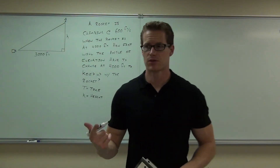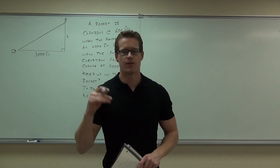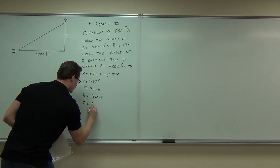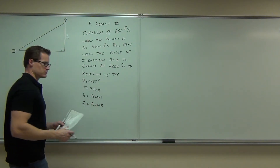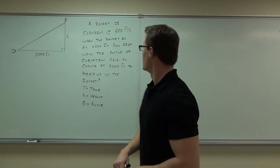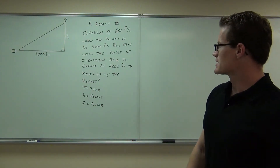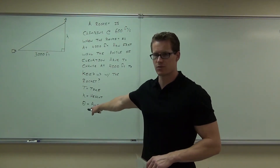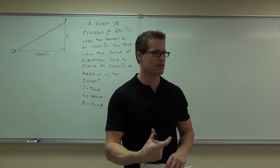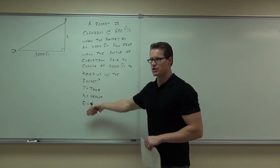Anything else that we need? We have the time, we've got the height — there's one more relationship up there. The angle — the angle of the camera. So we have to have something to do with the angle. Let's see if we've related everything in our problem — here's where you read through your problem carefully. A rocket's climbing at 600 feet per second when the rocket's at 4,000 feet — that's a height, we have something for height. How fast is the angle of elevation — that's our angle, so we needed to have that. How fast will the angle of elevation have to change? That's a rate of change, so we needed something to do with time. So we have our time, our angle, and our height — we have all the letters that we're going to need.